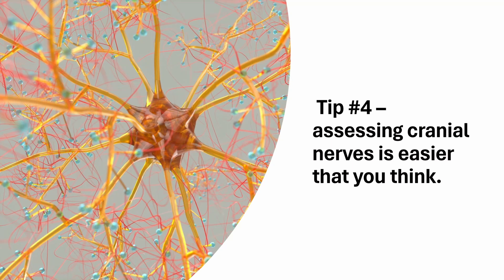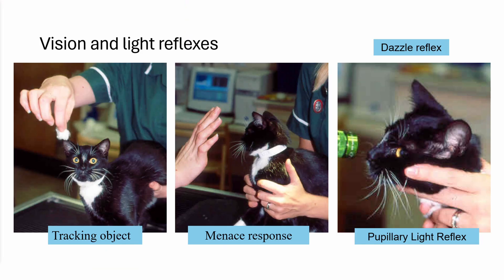Our fourth tip is that assessing cranial nerves is actually easier and takes less time than you think. I tend to divide it into three main parts: assessing vision and light reflexes, assessing facial sensation and movement, and assessing the bulbar nerves. There will be dedicated videos to each part, but I wanted to have one place with an overall look at this.